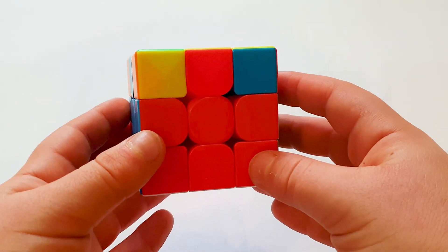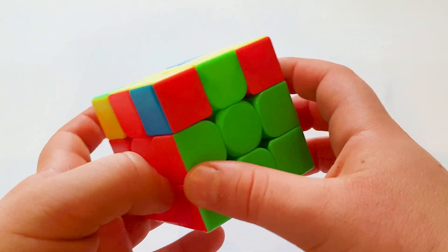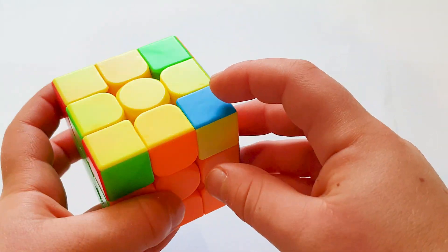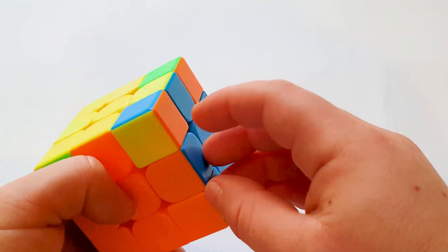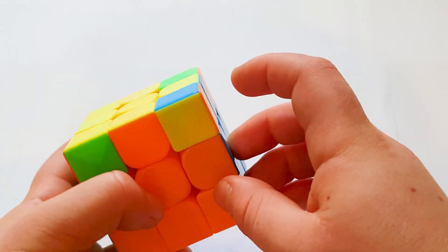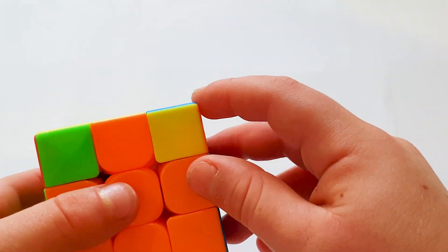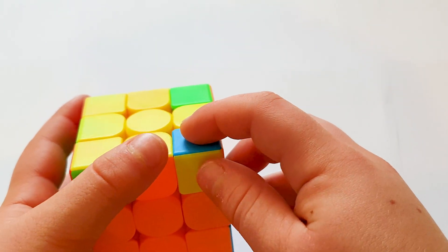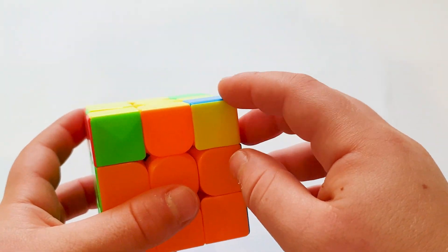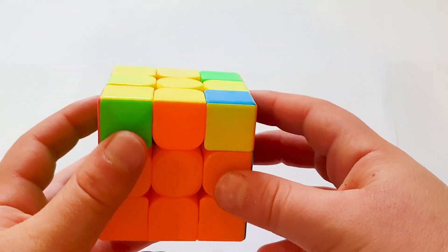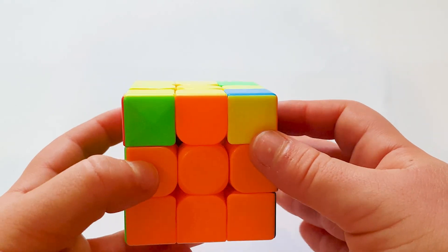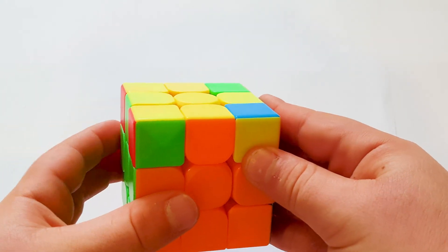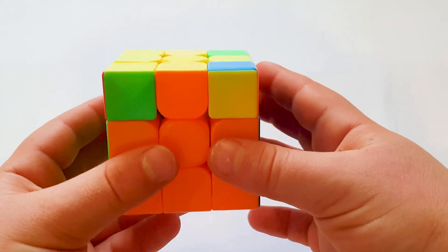In the second last step, we are going to position the corners. We search the top layer and see if some are matching. For example, I got blue, orange, yellow, blue, orange, yellow. But if it's going to be like blue, orange, yellow, then it doesn't matter. It just has to be correct. But if none of them are matching, then you start from a random one. In this case, I got blue, orange, yellow that are matching.